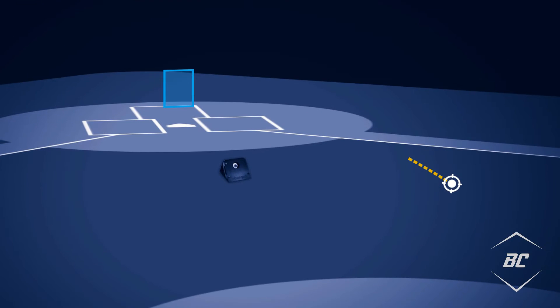To measure ball movement from batted balls or pitches thrown, Rapsodo measures the spin rate and axis of the ball to calculate pitch trajectory. Therefore, Rapsodo does not capture the entire flight of the ball, but rather uses images of the ball captured over a specific distance to predict or project the total trajectory of the baseball.